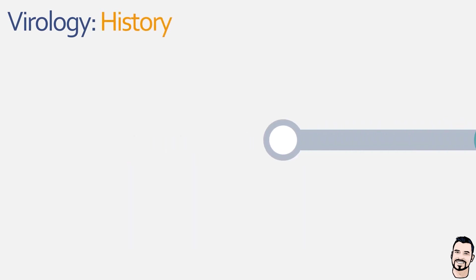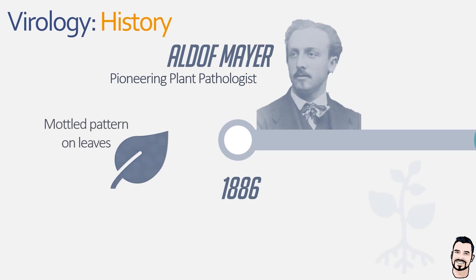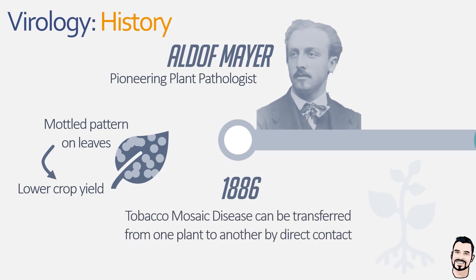It all started towards the end of the 19th century when Adolf Meyer, a German chemist and plant pathologist, was investigating the cause of tobacco mosaic disease. This was the disease of the tobacco plant that resulted in a mottled pattern on the leaves, reducing the overall quality and yield of the product. In some of his early experiments, he showed that the disease could be passed from one diseased plant to another using the sap of the diseased plant.